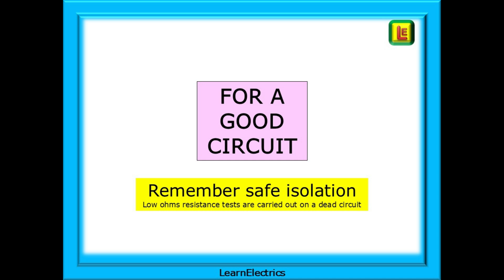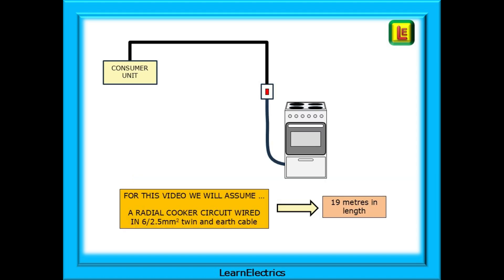Let's start with looking at low ohms resistance measurements in a good circuit — a healthy circuit. What sort of readings should we expect and how do we know if they are correct? For this video we will assume a radial cooker circuit wired in 6 square millimetre by 2.5 square millimetre twin and earth cable, and that the circuit length is about 19 metres in one direction.